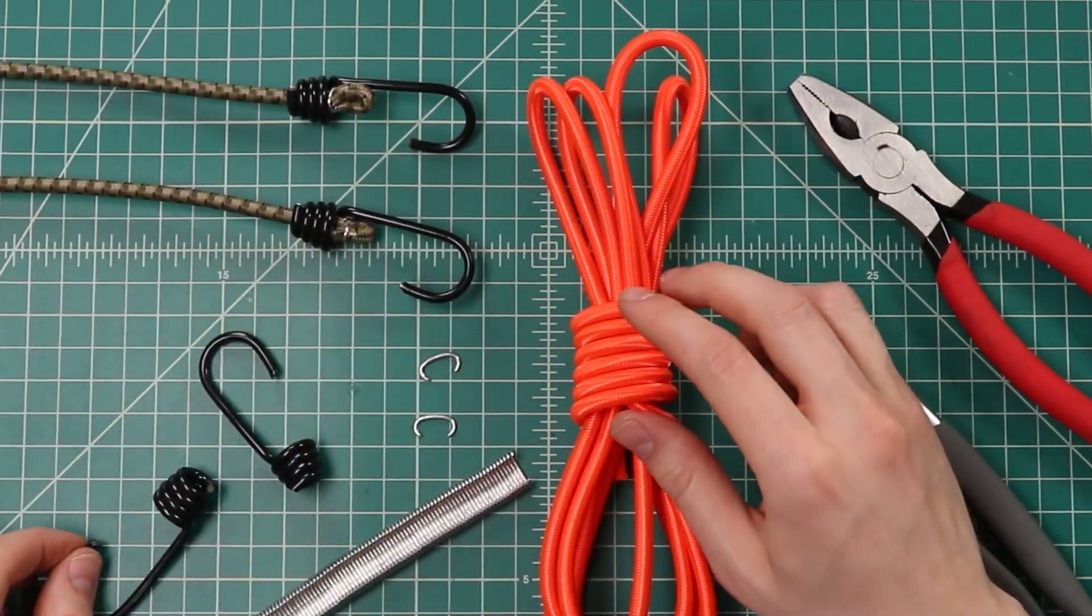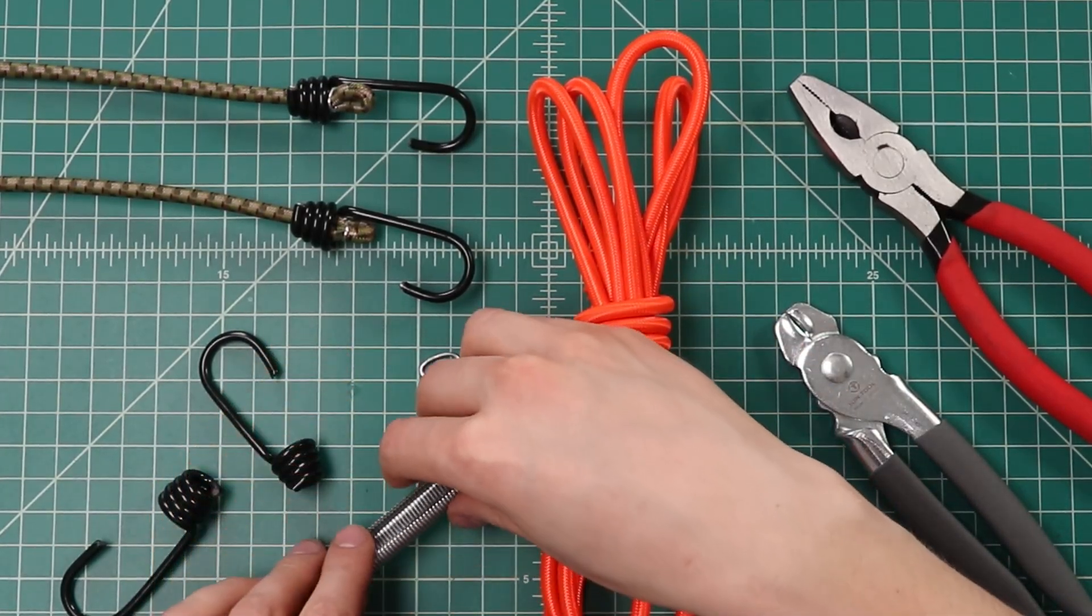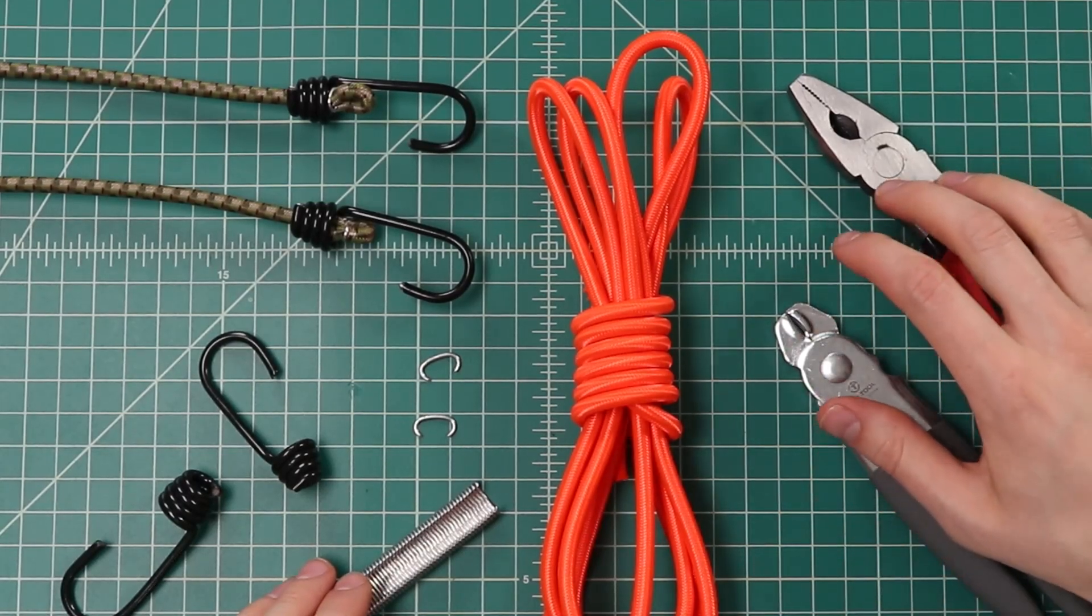But in addition to these, you're just going to need some bungee cord, some hog rings ideally, and then a pliers or hog ring pliers. I'll show you how to use both.